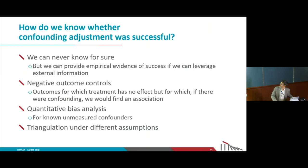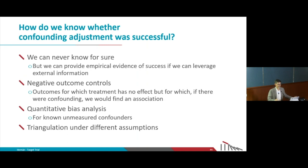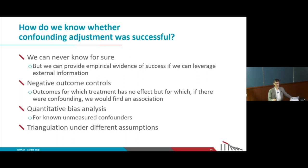Ways to deal with this include using negative outcome controls or positive outcome controls — in the colonoscopy example we know the effect on total mortality should be very small, so if we find a very large effect, we know that is confounded. We can do quantitative bias analysis when we know the confounders we're missing, or triangulation with data from other sources. But the bias from lack of randomization will always be a problem. The whole point of target trial emulation is getting rid of all the other biases so we can focus on confounding.